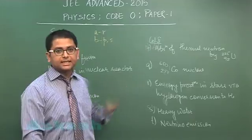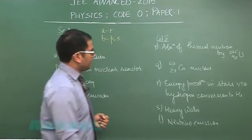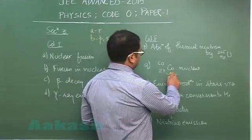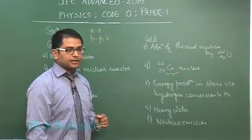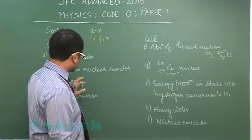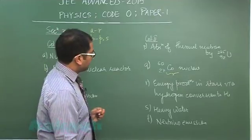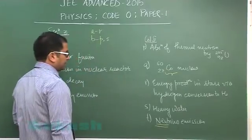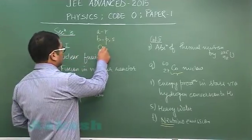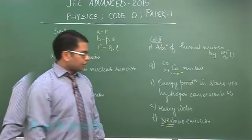For option C, beta decay, this is a valid answer where cobalt nucleus gets converted to nickel, and in that process beta decay happens. Particularly, if there is beta decay, quite obviously neutrino must be emitted. So here C would have a correct link with Q and T.